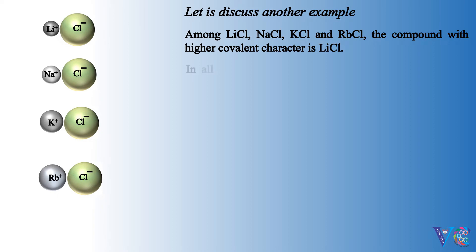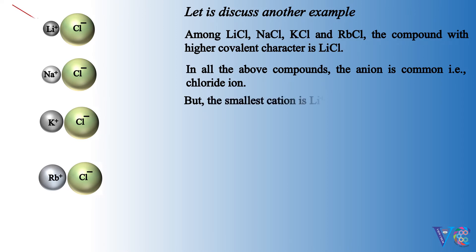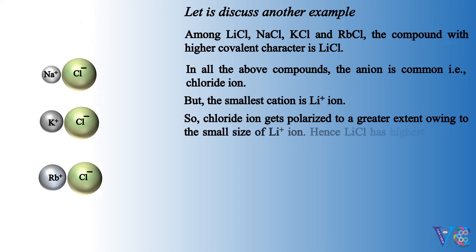In all the above compounds, the anion is common, that is chloride ion. But the smallest cation is Li+ ion. So chloride ion gets polarized to a greater extent owing to the small size of Li+ ion. Hence lithium chloride has highest covalent character among the 4 halides shown above.